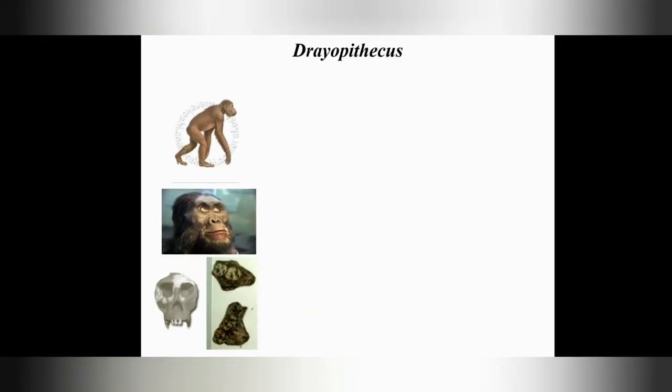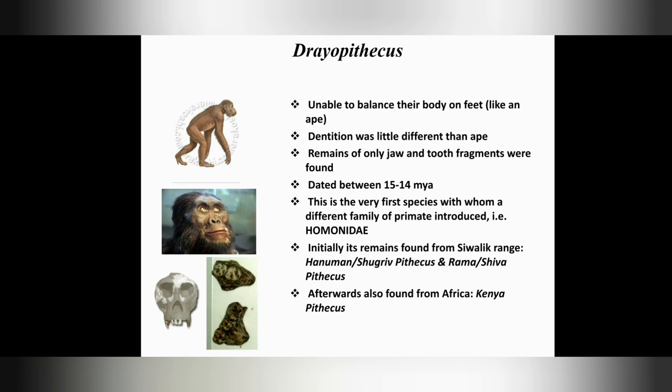The first is Dryopithecus. This species was unable to balance their body on feet, and their dentition was slightly different from apes. This species dated between 15 to 14 million years ago. This is the very first species with which a different family of primates was introduced, called Hominidae. Initially, its remains were found from the Shivalik range, named as Hanuman or Shugriv Pithecus, and Rama or Shiva Pithecus. Afterwards, it was also found from Africa, called Kenya Pithecus.